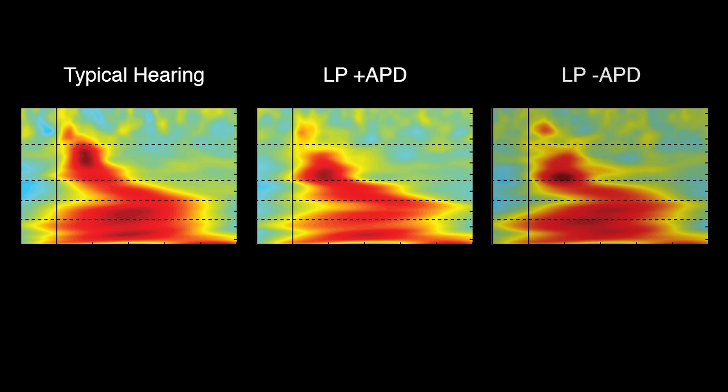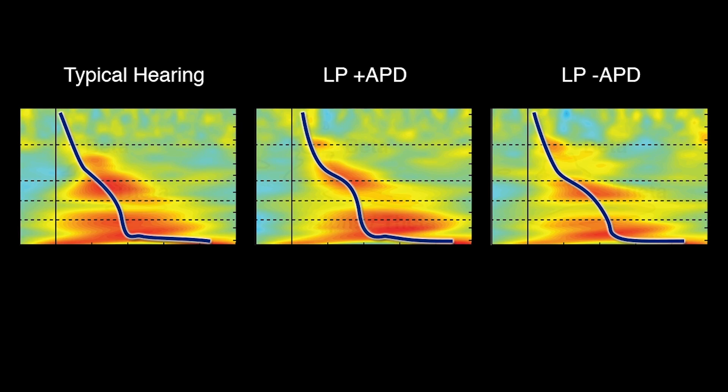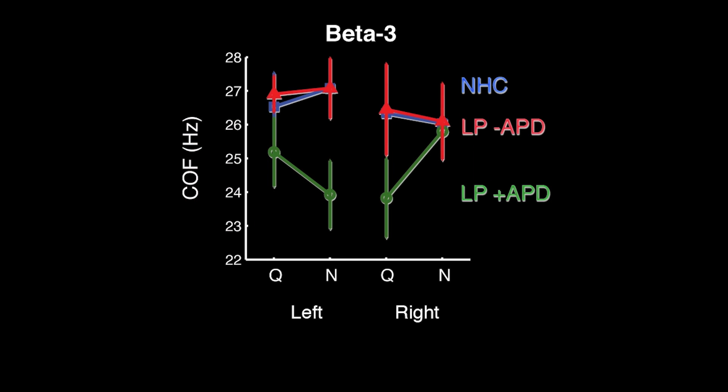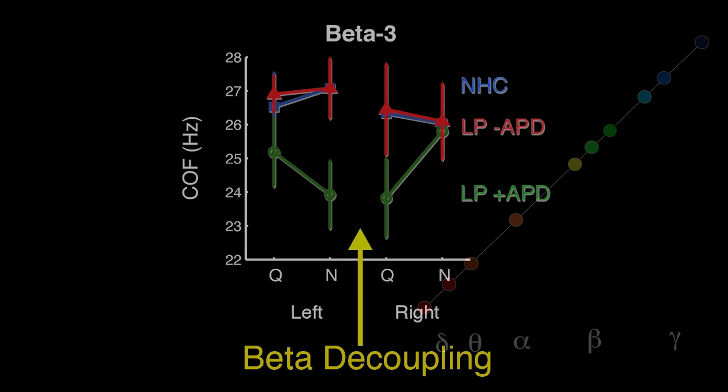In another study, we compared responses in typically hearing children and in children with listening problems, both with and without a clinically diagnosed auditory processing disorder. Responses in quiet revealed the expected spectral-temporal hierarchies, but with diminished beta and alpha responses when listening in background noise. In other words, children with auditory processing disorders showed a lower frequency in the beta band compared to the other groups. This further corroborates the notion that beta decoupling is reflected by poor auditory processing.